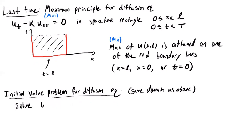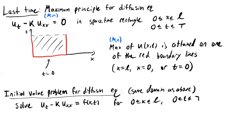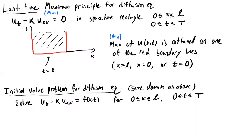So what does the initial value problem look like? We want to solve the PDE — let's look at the most general non-homogeneous version, where F is just some function that doesn't depend on u. We want zero less than or equal to x, less than or equal to L, and zero less than or equal to t, less than or equal to capital T, subject to certain boundary conditions on each of the lines specified before.